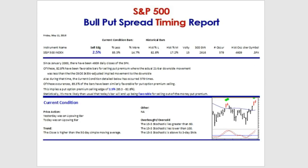For those of you that like to do bull put spreads — selling puts maybe a standard deviation away, 30 days out — that's the premise we're looking at here. Of those 4,609 daily closes of the S&P 500, 82.8% were favorable bars for selling put premium: a standard deviation away, 30 days out, 21 bars.